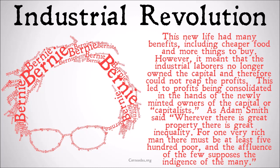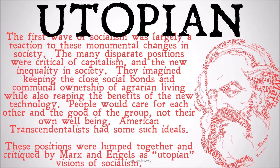The first wave of socialism is largely just a reaction to these monumental changes in society, moving from agrarian to industrialized society. The many disparate positions in this wave were critical of capitalism and the new inequality that existed in society. They imagined keeping the close social bonds and communal ownership of agrarian living, while also reaping some of the benefits of the new technology, where people would care for each other communally and for the good of the group.